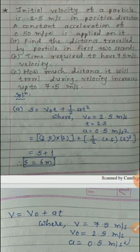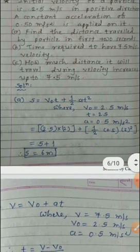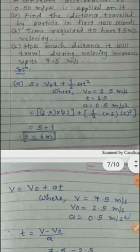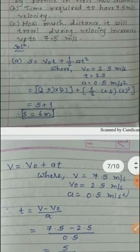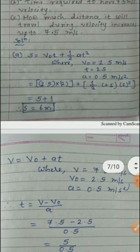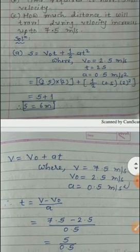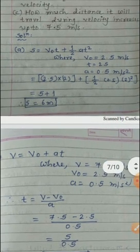Part b: find the time required to have 7.5 meter per second velocity. Part c: find how much distance it will travel during the period when velocity increases up to 7.5 meter per second. Solution: using s = v0 t plus half a t square.